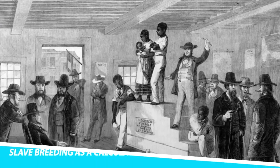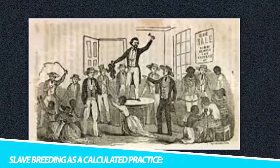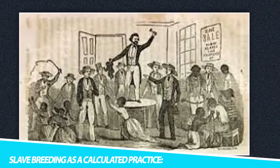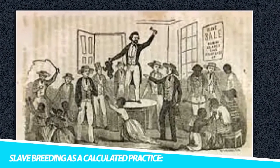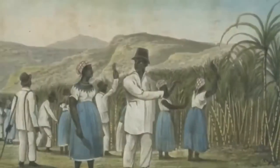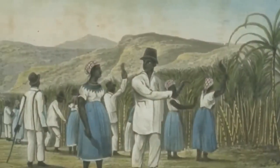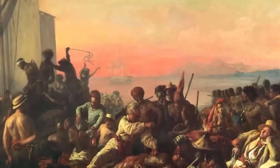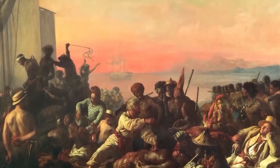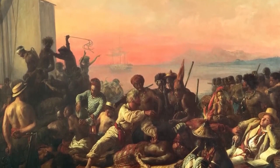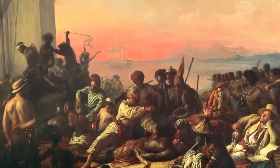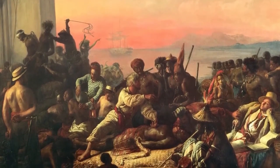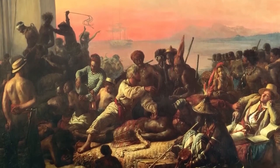Slave breeding was not accidental, but a meticulously planned and controlled practice. Slaveholders would strategically pair enslaved men and women to produce children who could be sold or used for labor on their own plantations. The pairing of enslaved individuals was often arranged based on their physical attributes, skills, and perceived value.